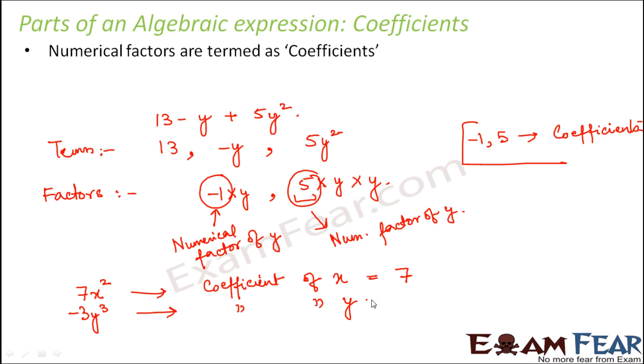If you have something like y, what would be the coefficient of y? The coefficient in this case would be 1. How about the coefficient of minus y? The coefficient of y in this case would be minus 1. So these are various examples where I showed you how we find out coefficient in an algebraic expression.